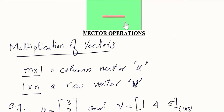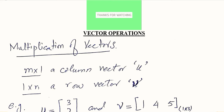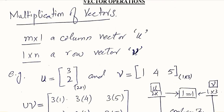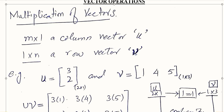In this video we'll learn about the operations of vectors or matrices. If you want to multiply two vectors, it has to go through a certain process. We consider a column vector and a row vector — in a column vector the number of columns is equal to 1, and in a row vector the number of rows is equal to 1. We represent the column vector with small u and the row vector with small v.